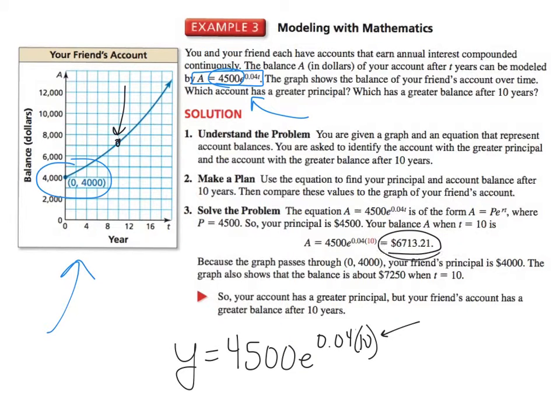If you plug it into a calculator, you're going to get approximately $6,713. And your friend has approximately about $7,200. So your friend's account has the greatest balance after 10 years. And that, ladies and gentlemen, is using the number e. Pretty easy—it's just using your calculator and using e in a formula. Thank you.